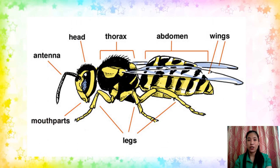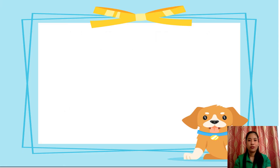How about the body parts of some insects? They have antennae, head, thorax, abdomen, wings, mouth parts, and legs. Those are some of the animals that can be found in the locality and some of their common body parts.